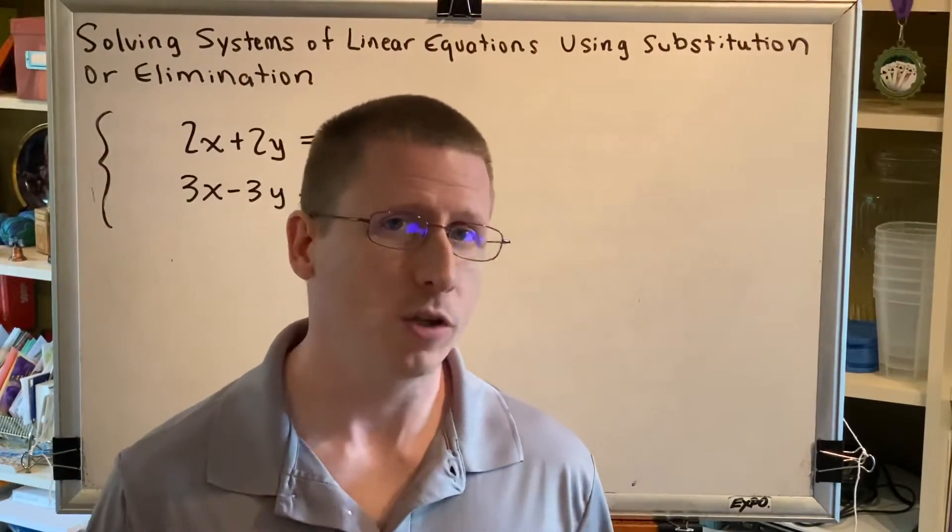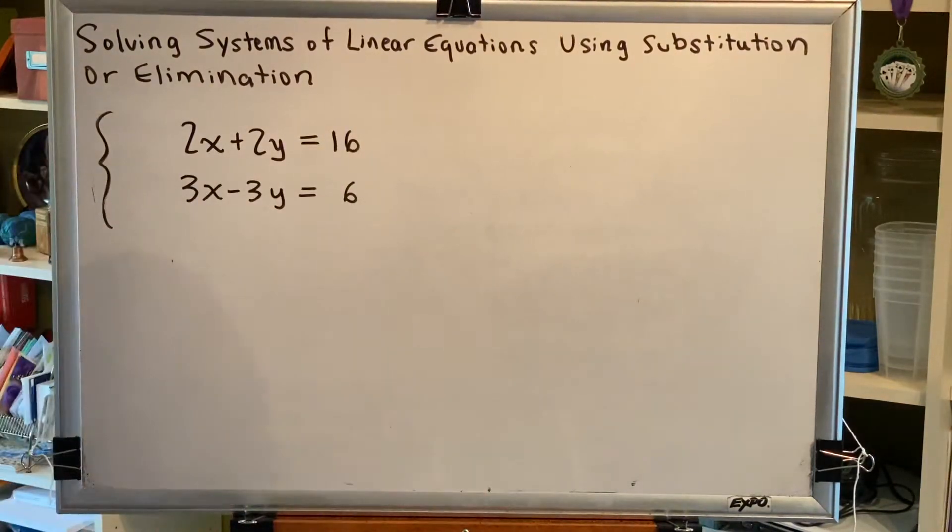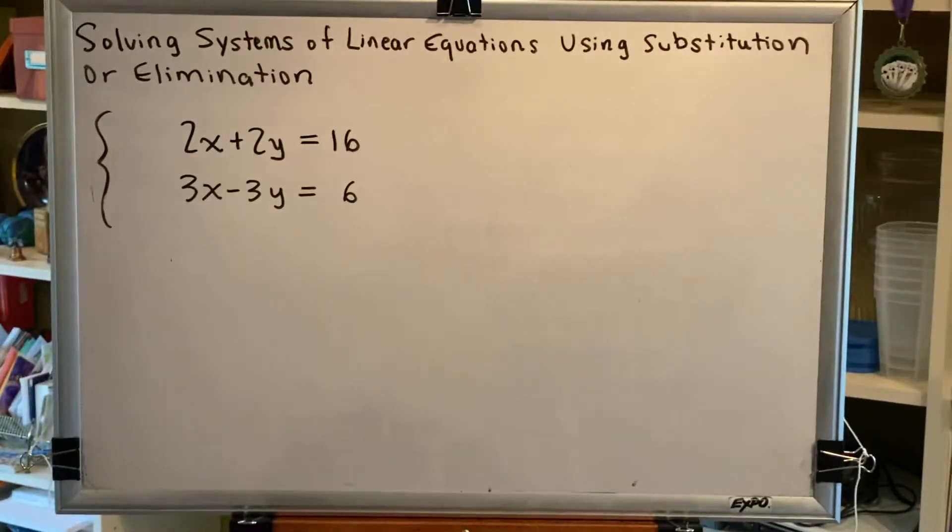The way we make that choice is by going through the three steps. Step one, clear away any fractions. We don't have any. Step two, look at the coefficients of x and y, hoping to find ones or negative ones.